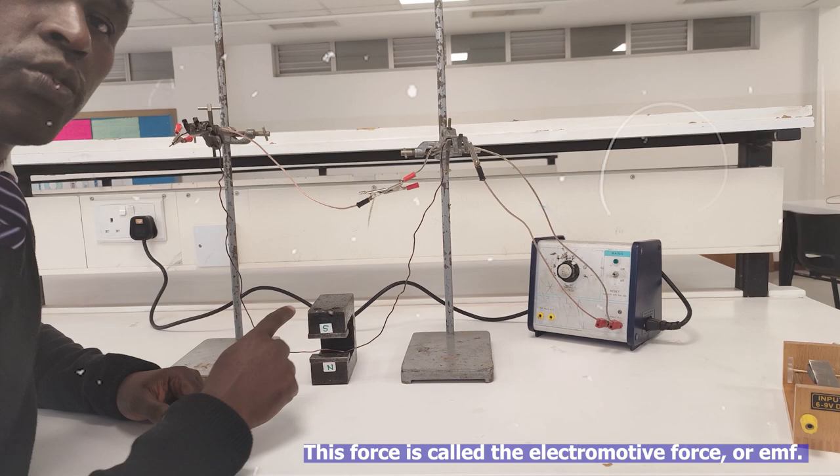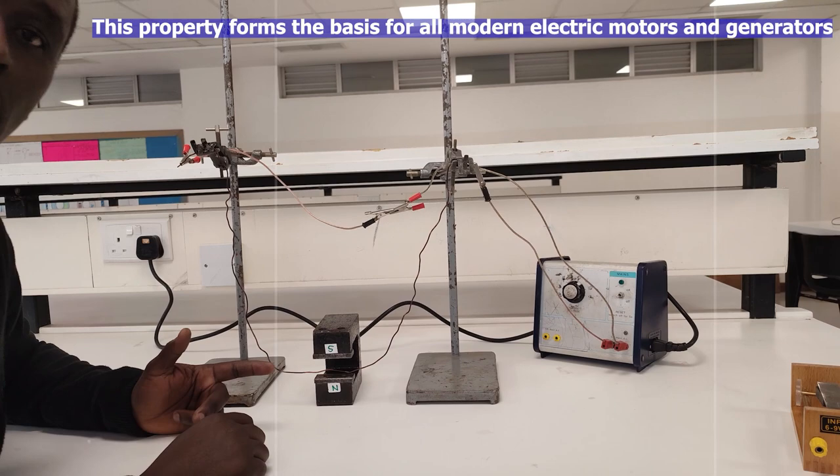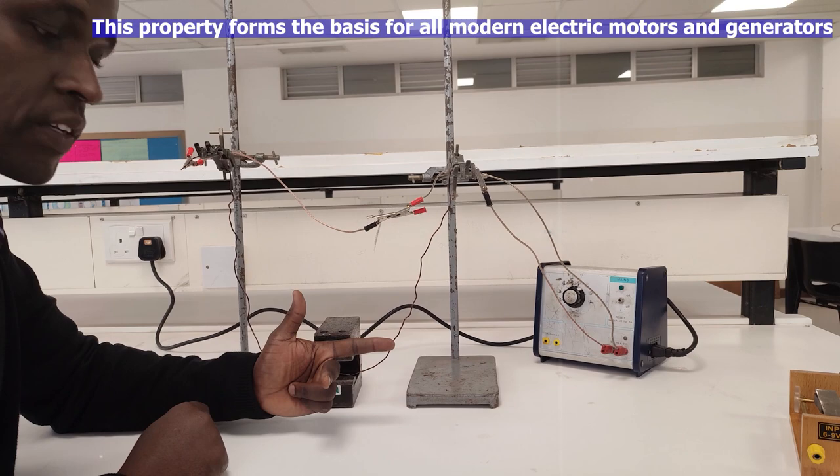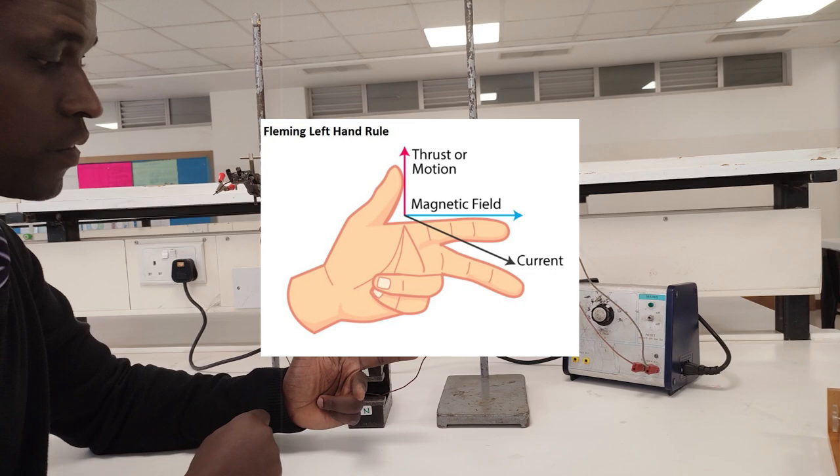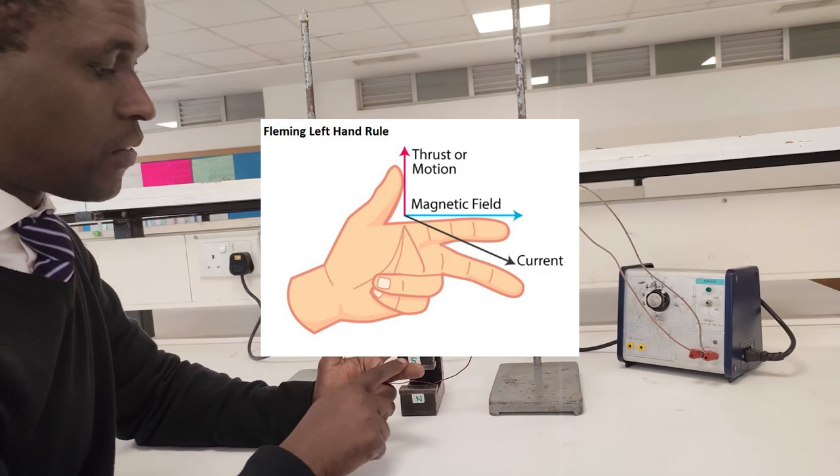And to determine the direction in which it deflects, we use Fleming's left-hand rule. In Fleming's left-hand rule, when you hold these first three fingers at right angle, you'll have your thumb representing the motion, you'll have your first finger representing the magnetic field, and you'll have your second finger representing the current.